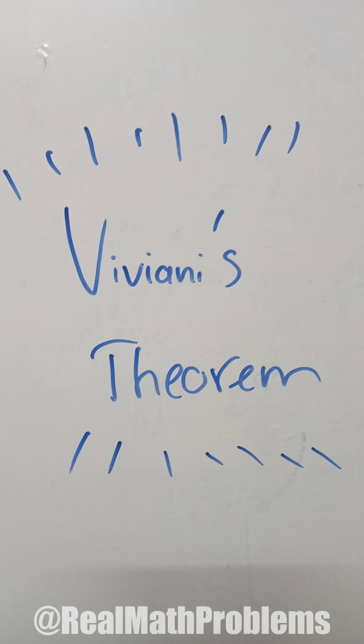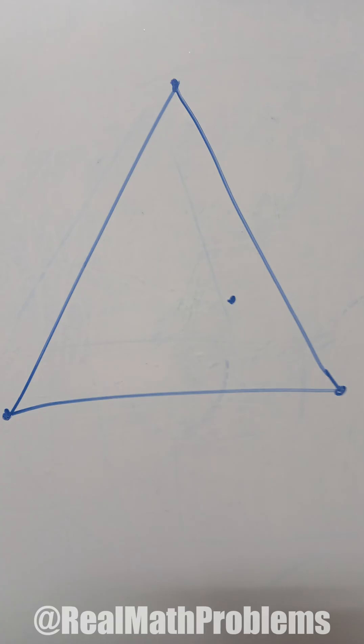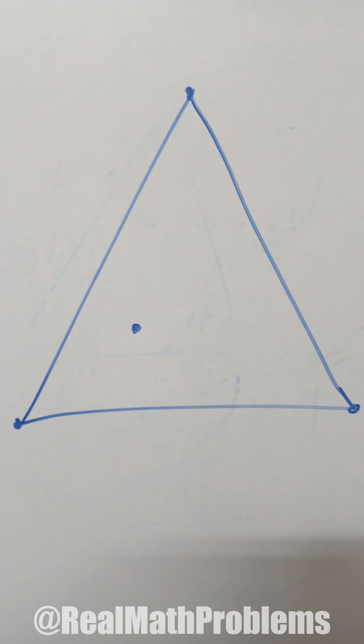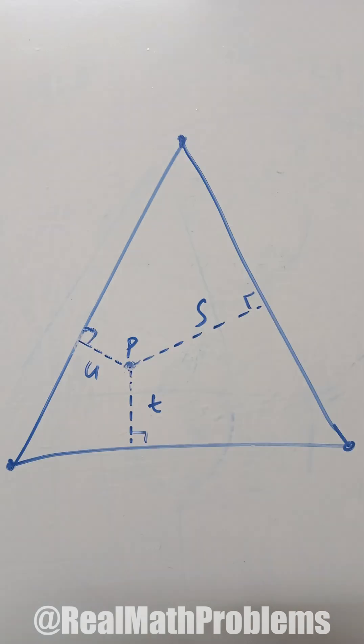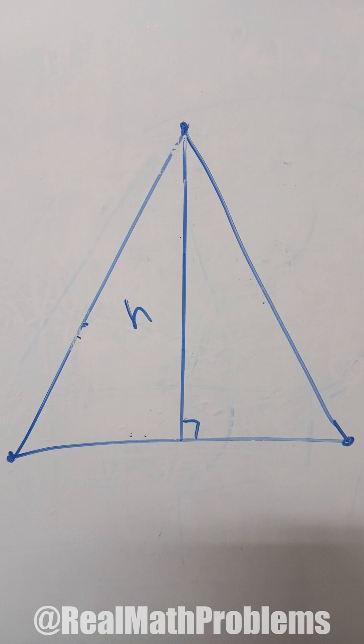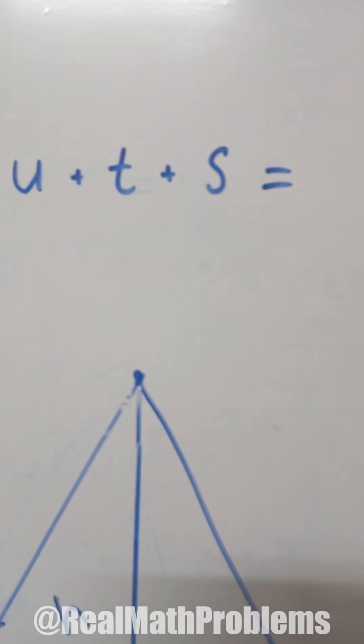Have you ever heard about Viviani's theorem? It's a very interesting geometric statement that says the sum of the shortest distances, labeled as U, T, S, from any interior point you choose to the sides of an equilateral triangle, equals the length of the triangle's altitude, or U plus T plus S equals H.